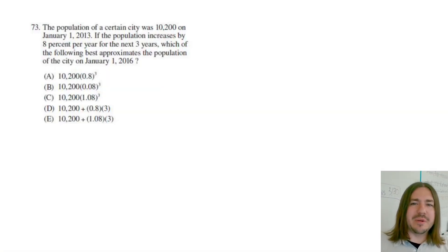Hey y'all, welcome back. On number 73, it says the population of a certain city was 10,200 on January 1st, 2013. If the population increases by 8% per year for the next three years, which of the following best approximates the population of the city on January 1st, 2016?